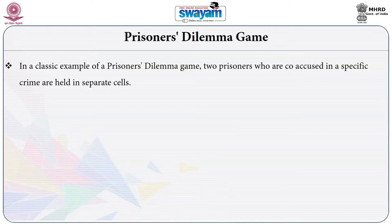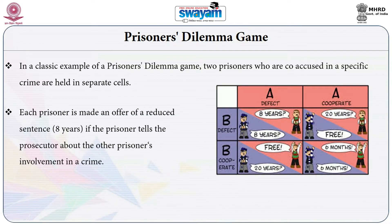The prisoner's dilemma is also used to explain usage of commons, traffic behavior, and appropriation of common property resources. In the classic example, two prisoners are co-accused in a crime and held in separate cells. The prosecutor has no direct evidence of the crime and relies on a confession from one or both prisoners. Each prisoner is offered a reduced sentence if they tell the prosecutor about the other prisoner's involvement.